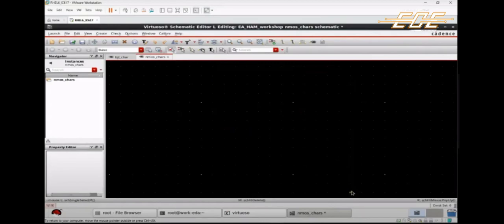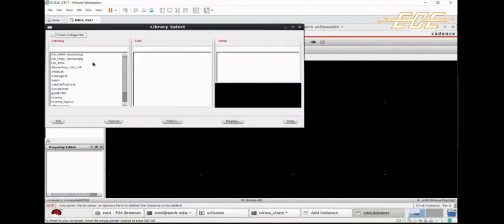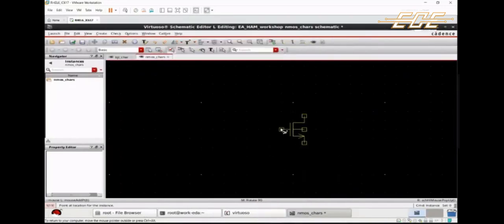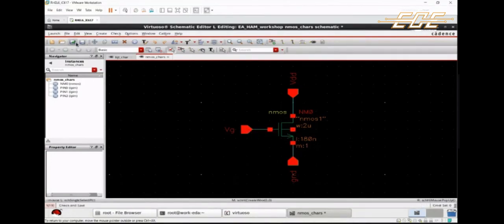Virtuoso makes circuit analysis so much easier. Choose your library, select the cell like PMOS or NMOS, and set the parameters as width and height. Place your components, make wire connections, and connect your signal pins. Now save your circuit.